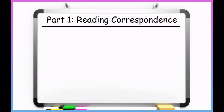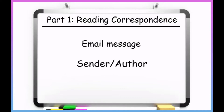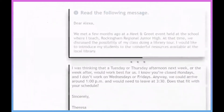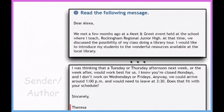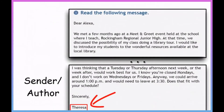Remember that the main passage in Reading Part 1 is an email message, so there will always be a sender and a recipient. I can immediately see that the author of the message is Teresa, and she's writing to Alexa.